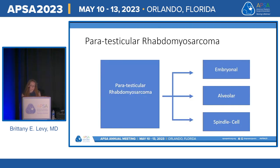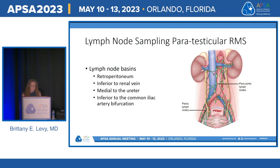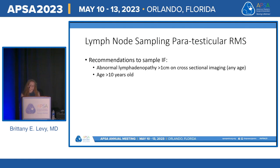There are multiple subtypes of paratesticular rhabdomyosarcoma, and PAX fusion genetic status is frequently considered to better stratify risk. Treatment is largely surgical, with further therapy determined by stage. Staging is related to the TNM system and requires understanding lymph node positivity. Lymph node basins include the retroperitoneum inferior to the renal vein, medial to the ureter, and inferior to the common iliac artery bifurcation. Patients with lymphadenopathy or who are older than 10 years are recommended to have lymph node sampling for accurate adjuvant therapy recommendations.